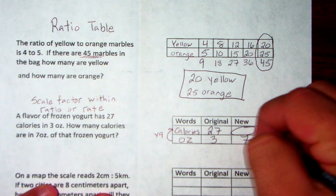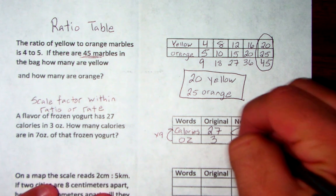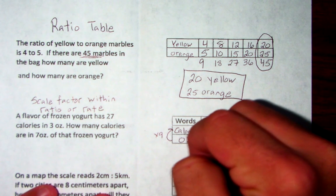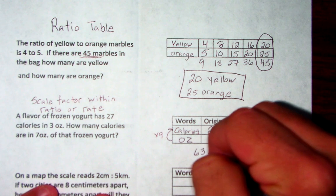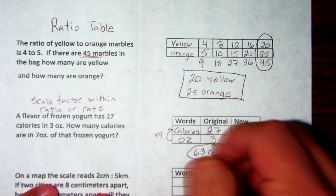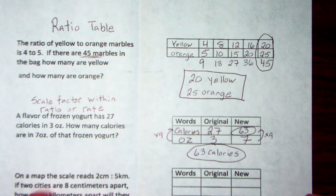So 7 times 9 will give us 63. So your answer is 63 calories. Now remember, whenever we're talking about scale factor, you are either multiplying or dividing. You do not add and you do not subtract.